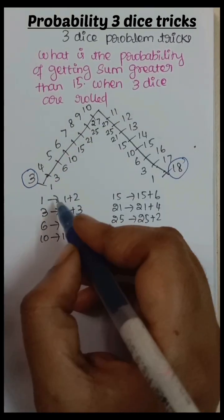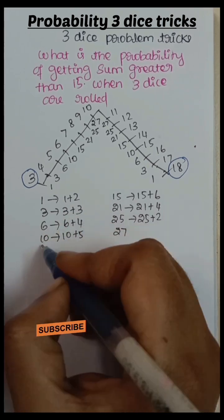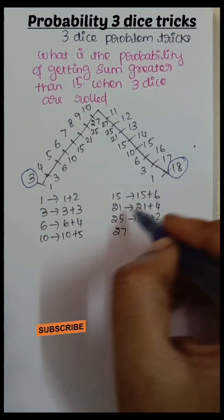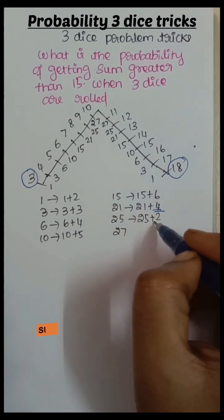18. Inner numbers of this triangle are 1, 1 plus 2 is 3, 3 plus 3 is 6, 6 plus 4 is 10, 10 plus 5 is 15, 15 plus 6 is 21, 21 plus 4 is 25, 25 plus 2 is 27.